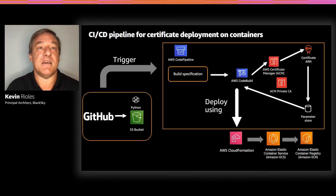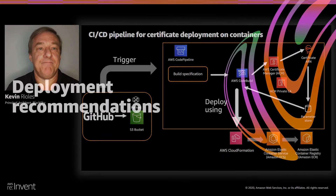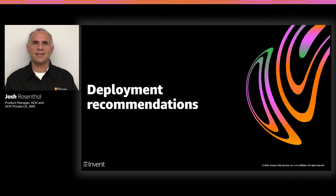When the container is actually started, it gets the ARN of the certificate and exports the certificate and key at runtime, then uses the certificate. Thank you, Kevin, for that deep dive into how BlackSky designed their PKI automation. The use of CodePipelines removed the repetitive manual processes. I'm glad to see you leveraging automation at scale for your certificate deployments.